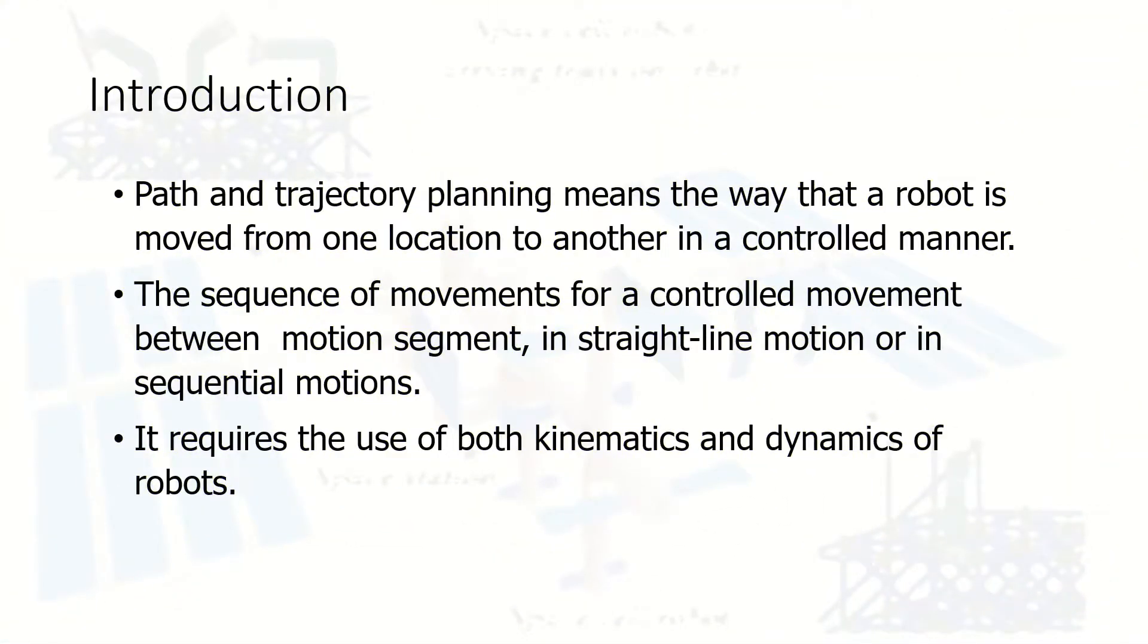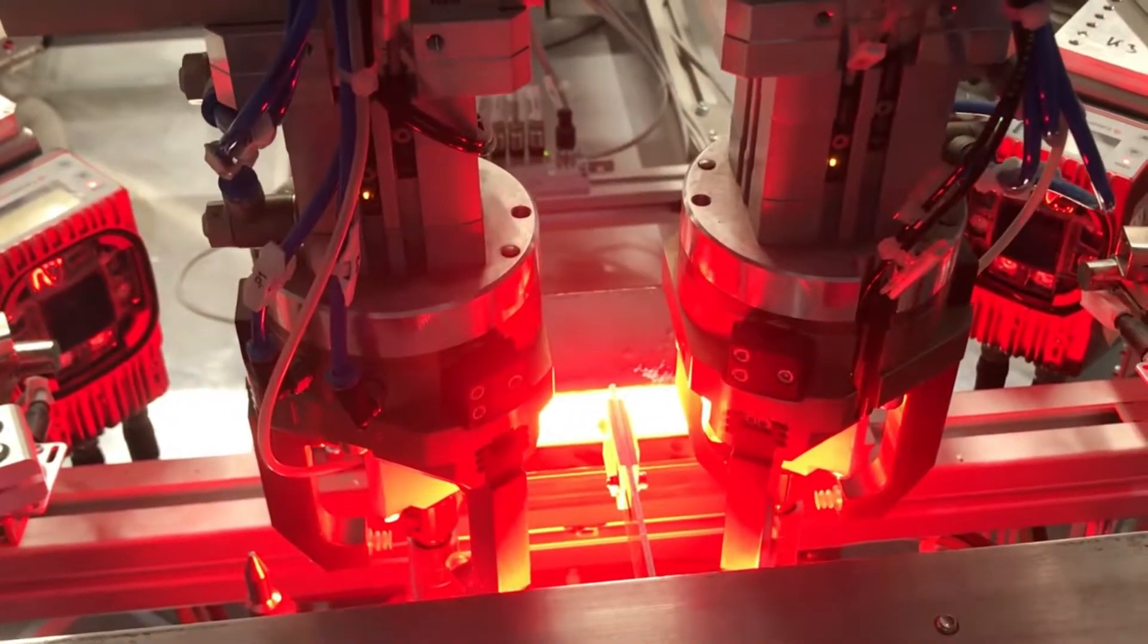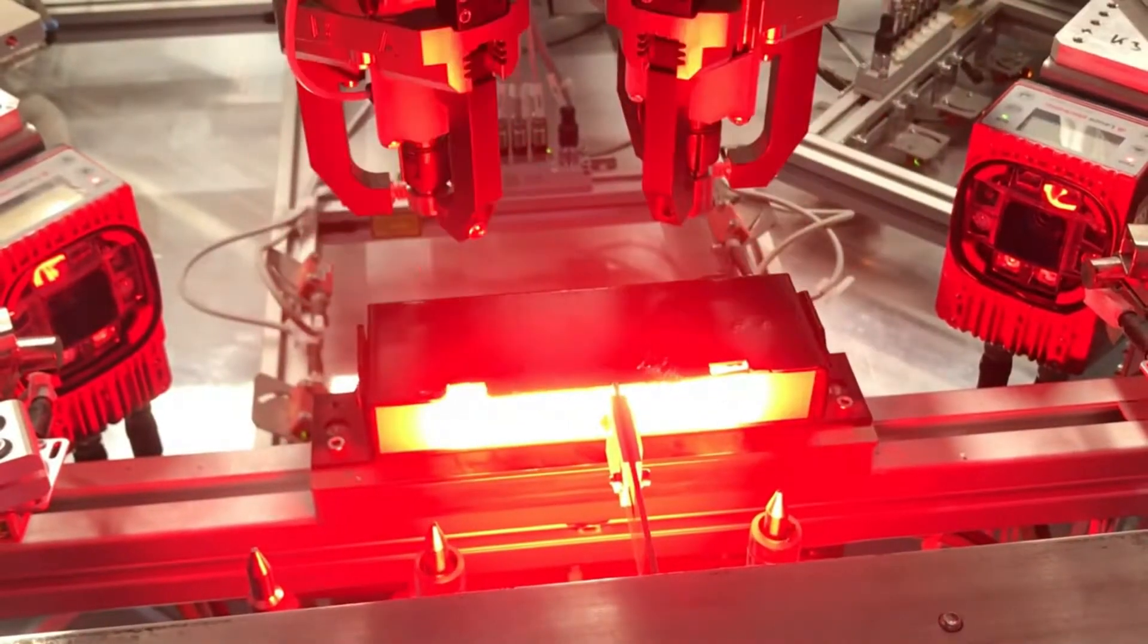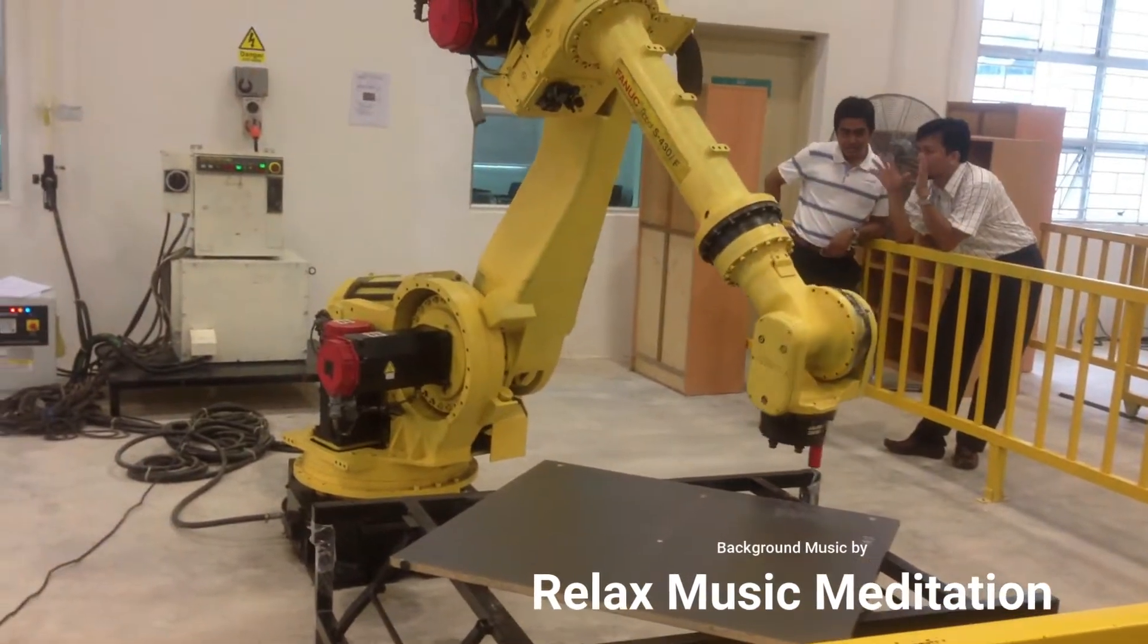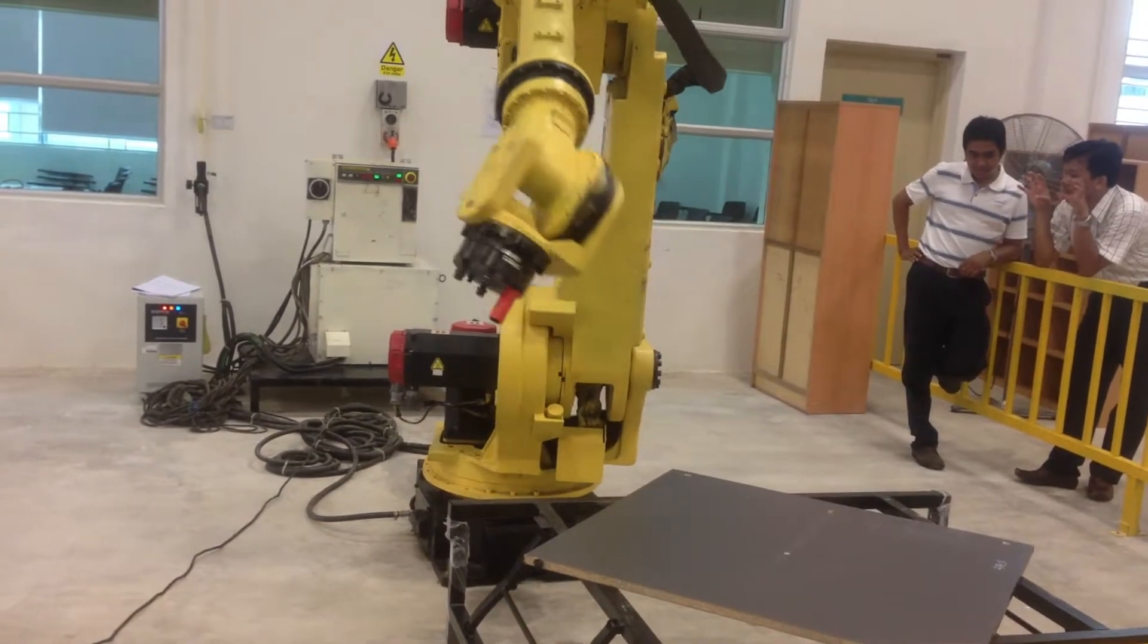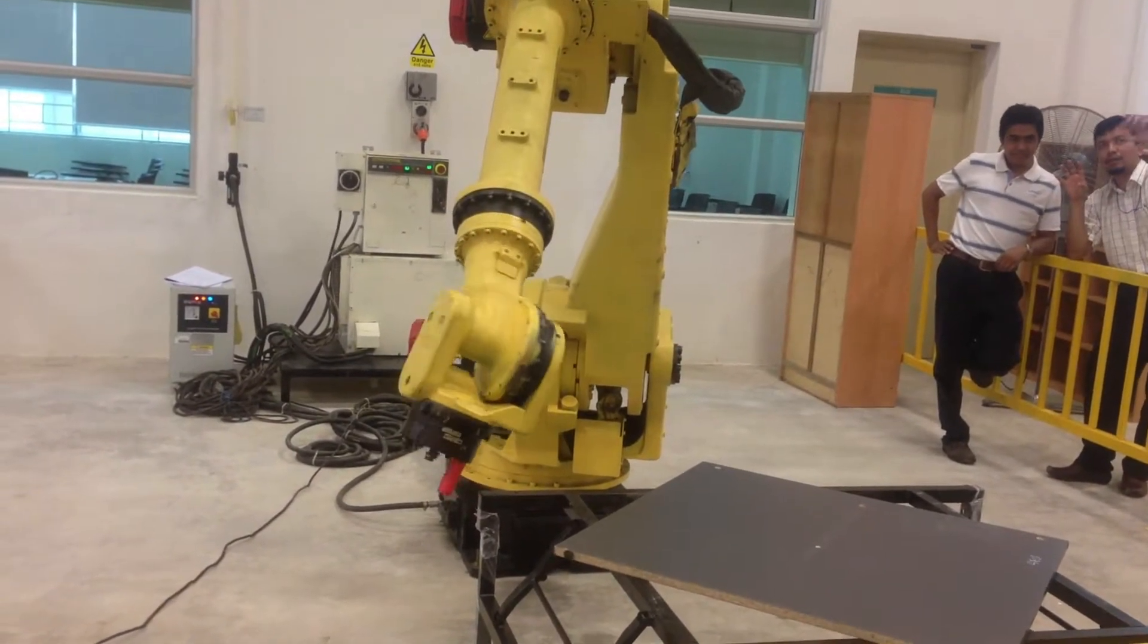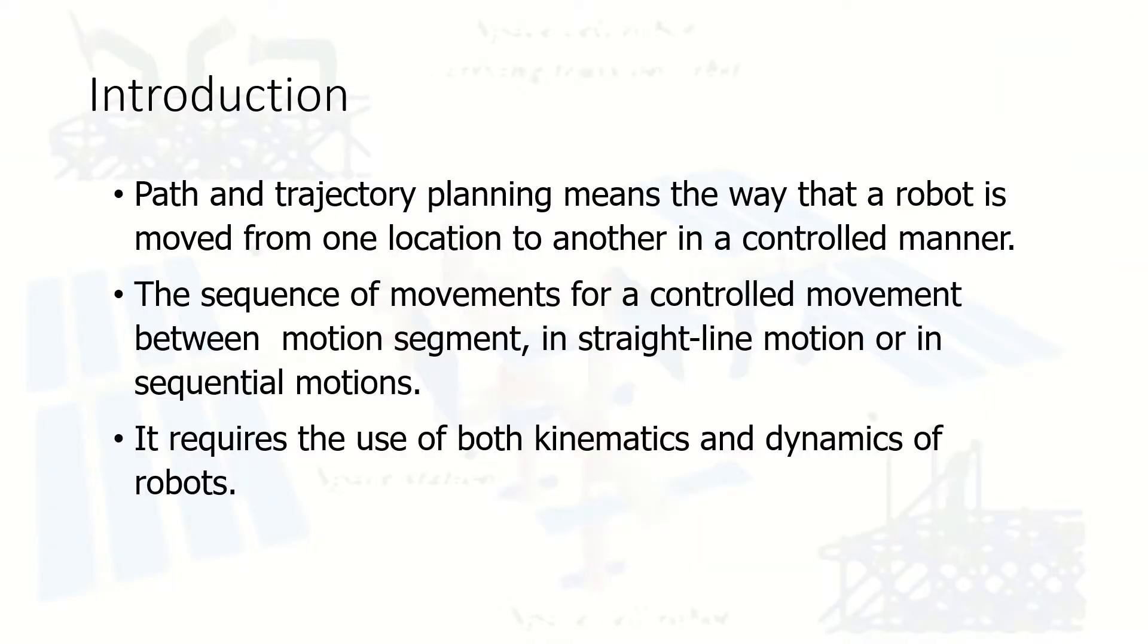When we look at the definition of path planning and trajectory in terms of robotics, it's easy to say that path planning and trajectory of the robots is the command or the way that the robot moves from one location to another in a controlled manner. This path planning is also a sequence of movement for the control of movement between motion segments in straight line motion or sequential motions depending on the situations.